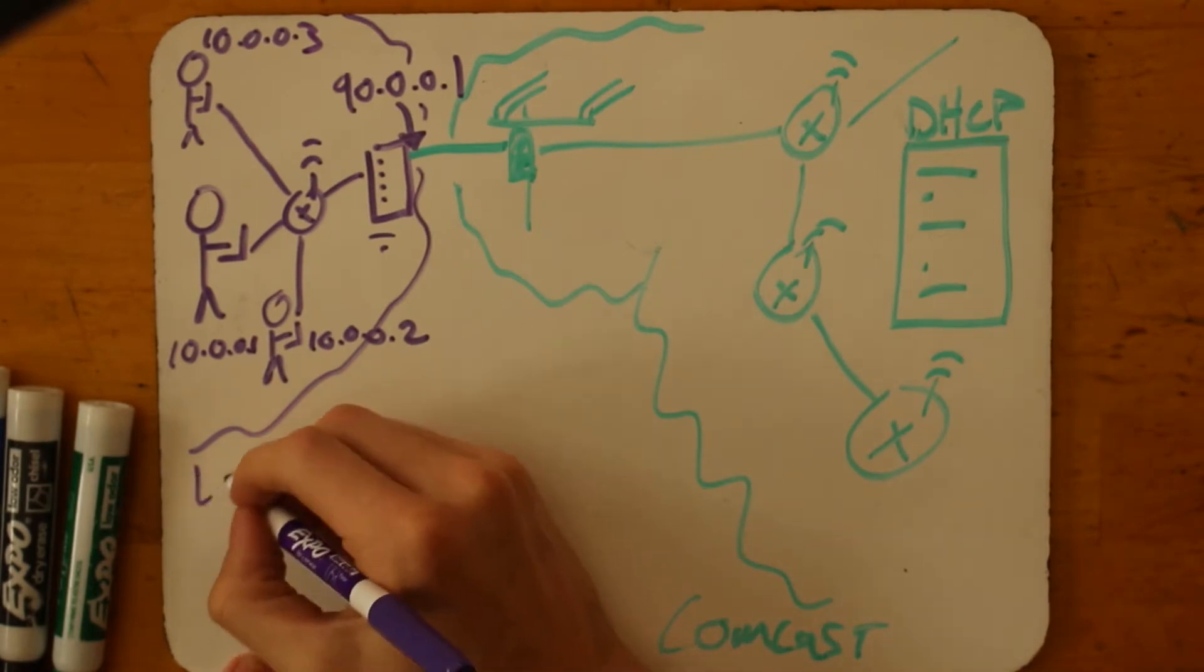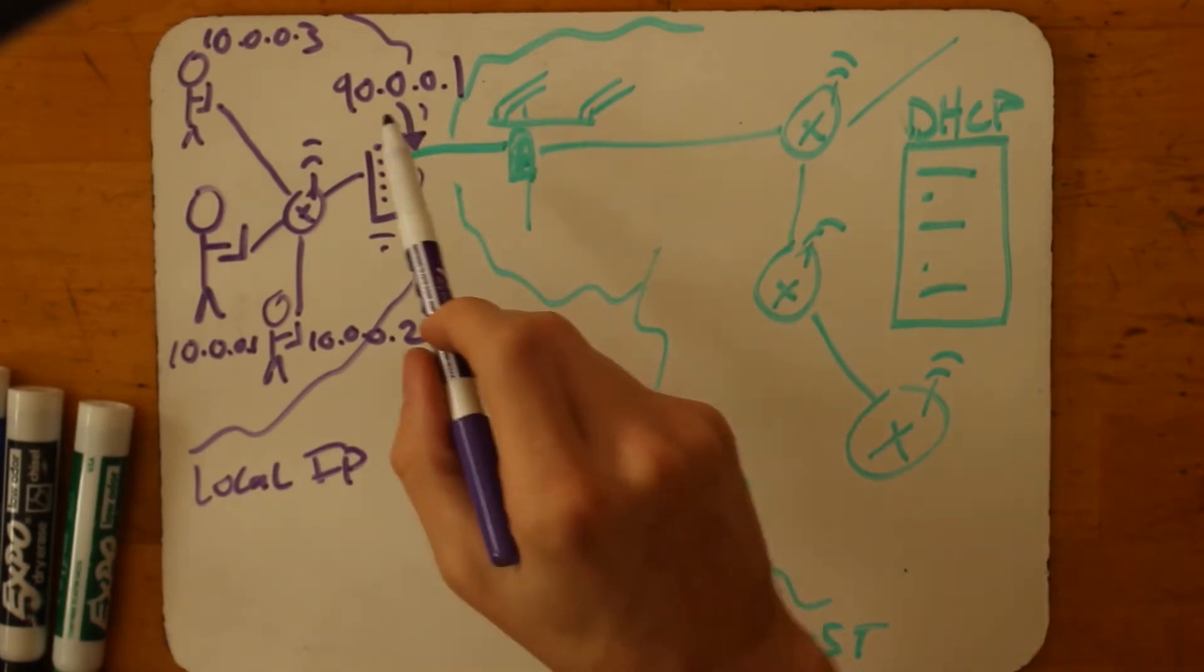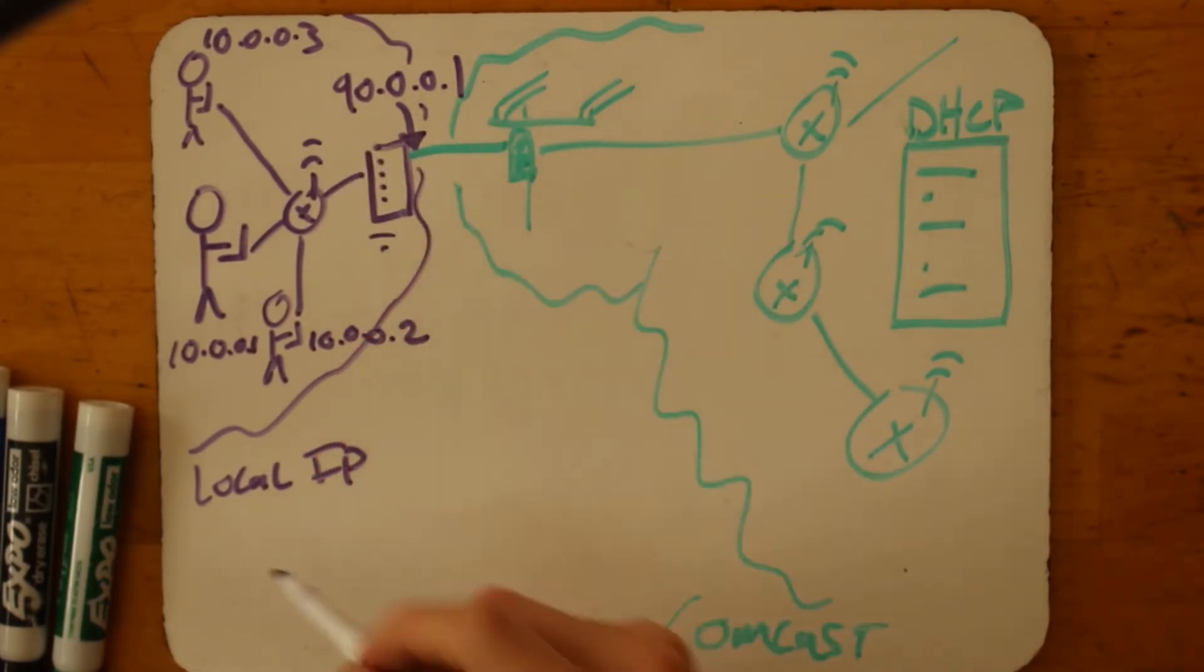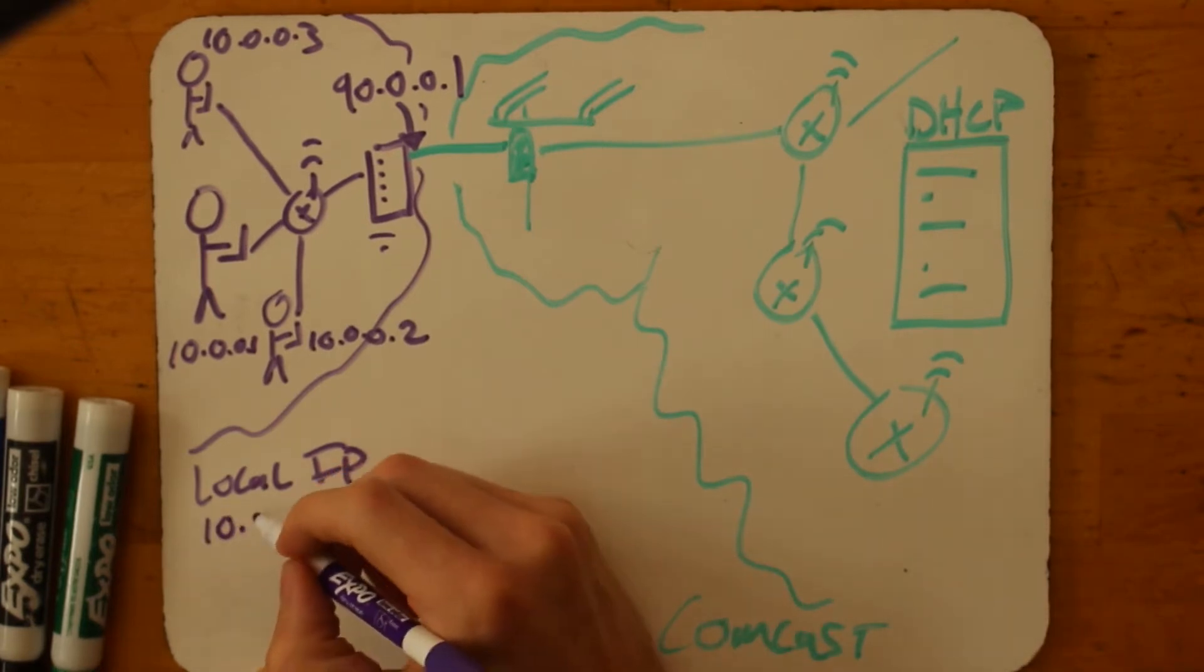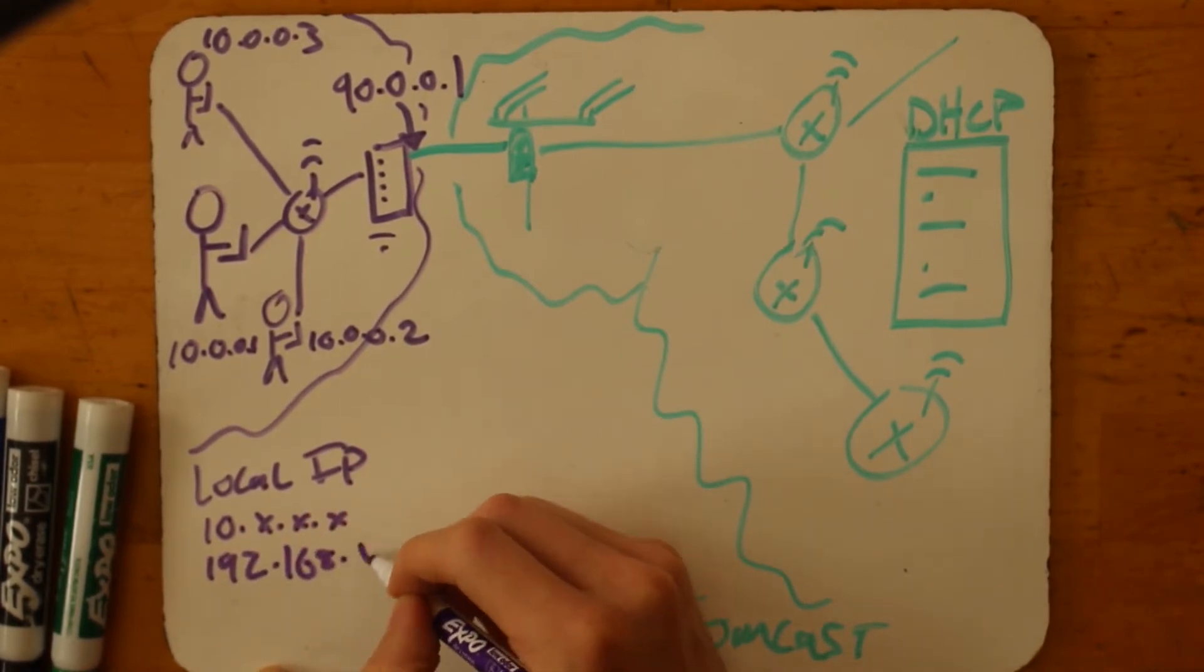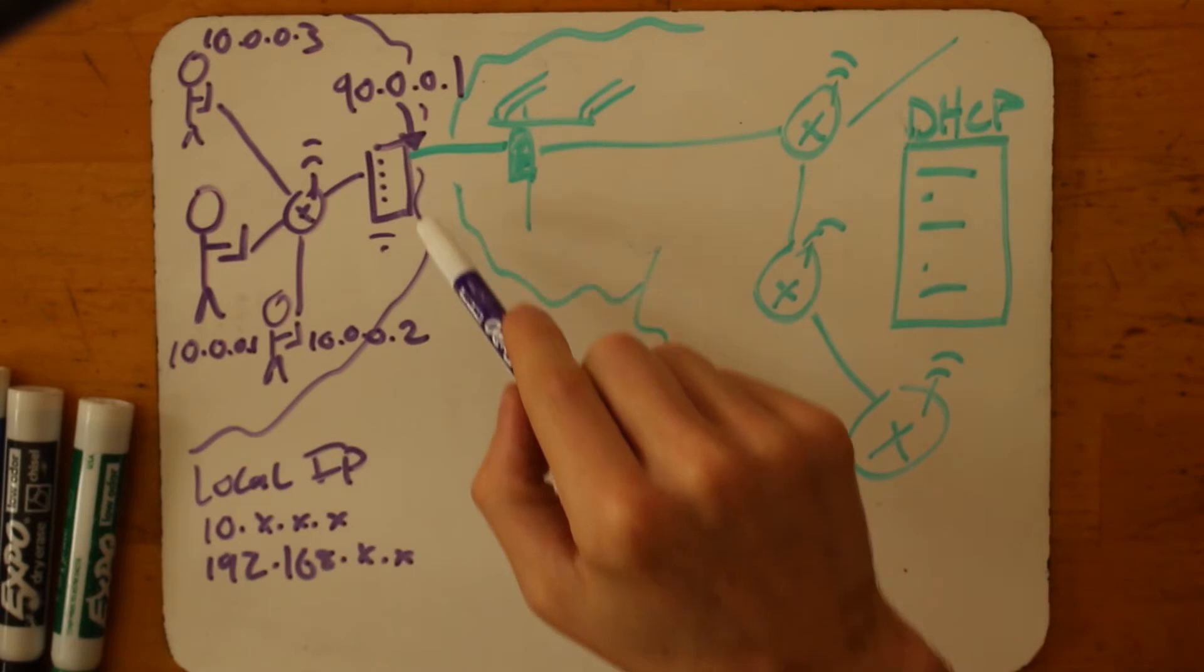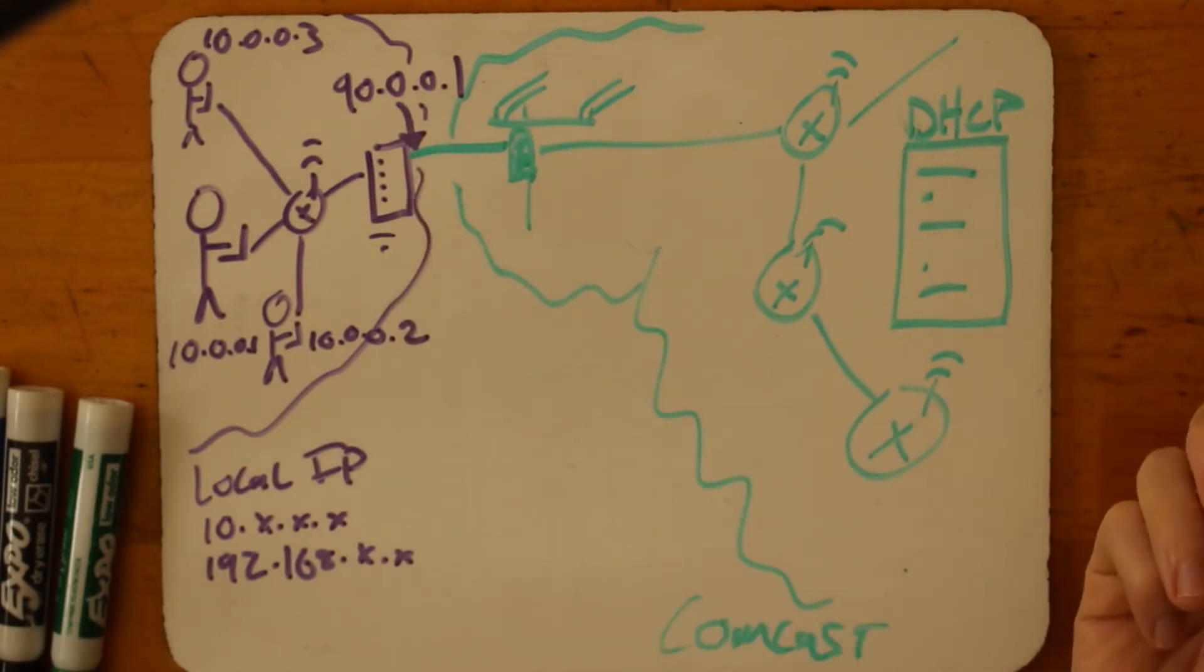Okay. So these are called local IP addresses, and this is a public IP address. And there are a few blocks, commonly the 10.anything block and the 192.168.anything block. These are two blocks of IP addresses that are reserved for use in local area networks. So no matter where you go, you can always have a 10 IP address on any network. And then the gateway that connects you to the broader internet will have a public IP address.